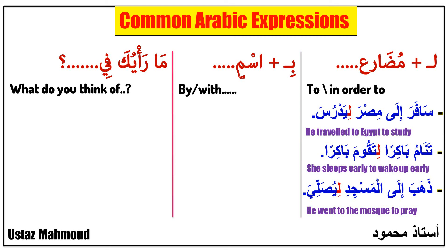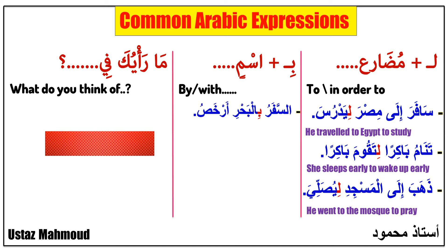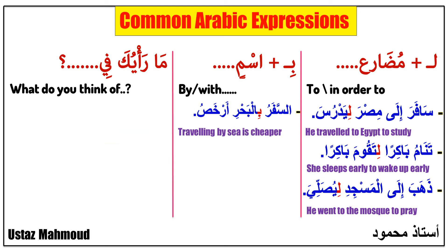Now the next expression is 'bi,' which means 'by' or 'with,' and it is always followed by a noun. Let's see some Arabic phrases. 'Al-safar bil-bahr arkhas' — it means 'traveling by sea is cheaper.' 'Al-safar' means 'traveling,' 'bil-bahr' means 'by sea,' 'arkhas' means 'cheaper.' As you see, 'bi' is followed by a noun.